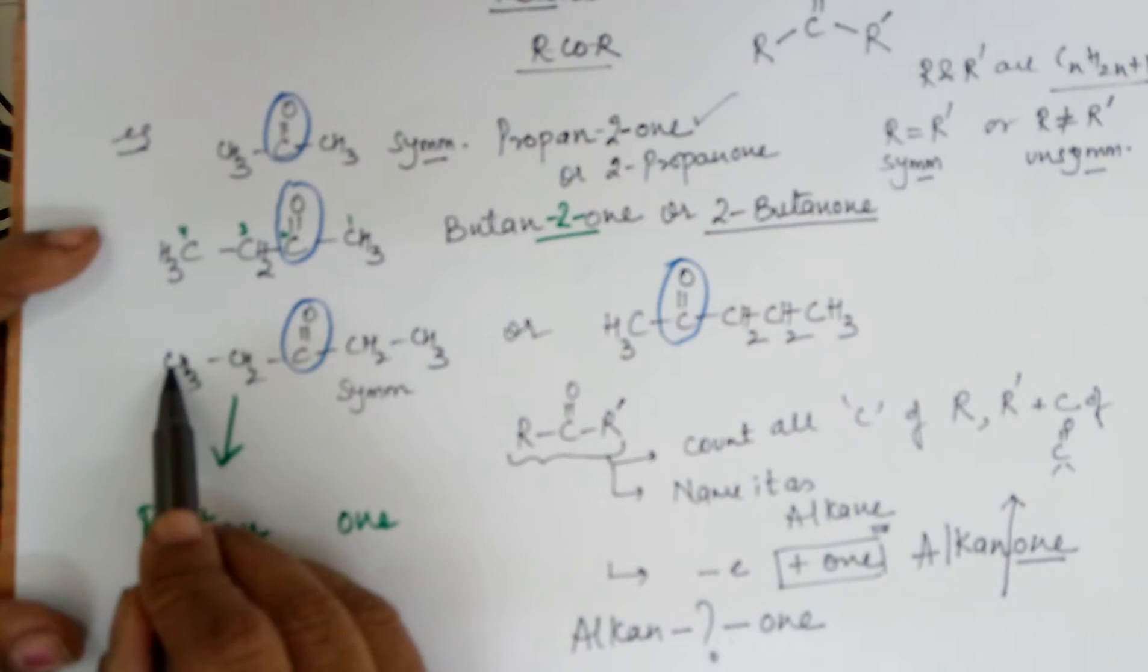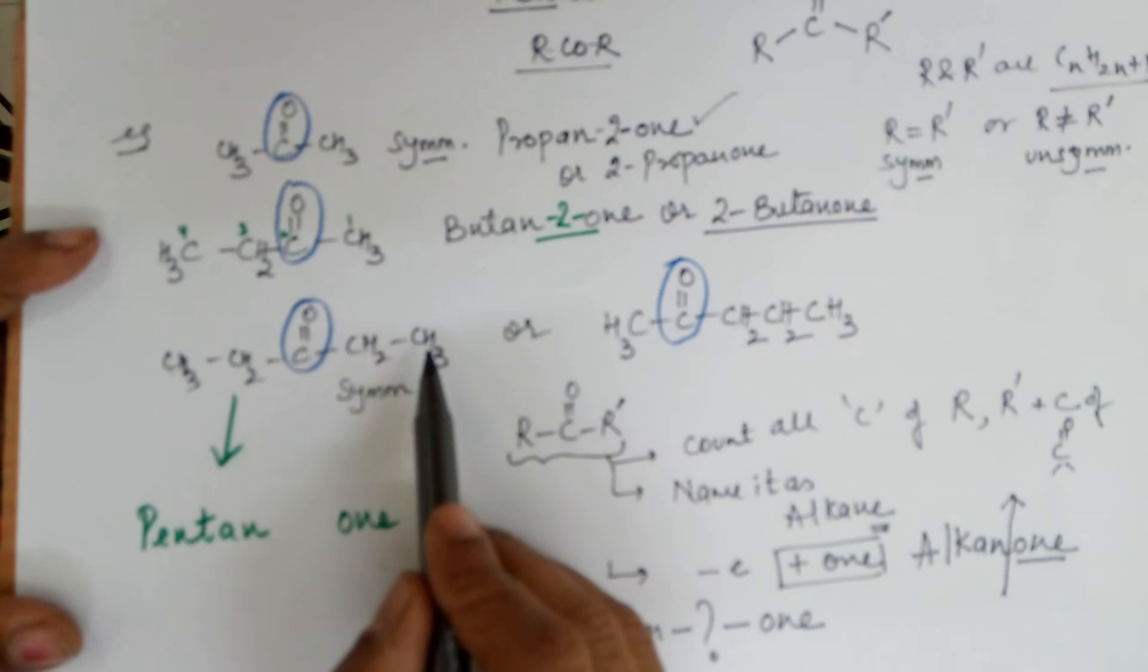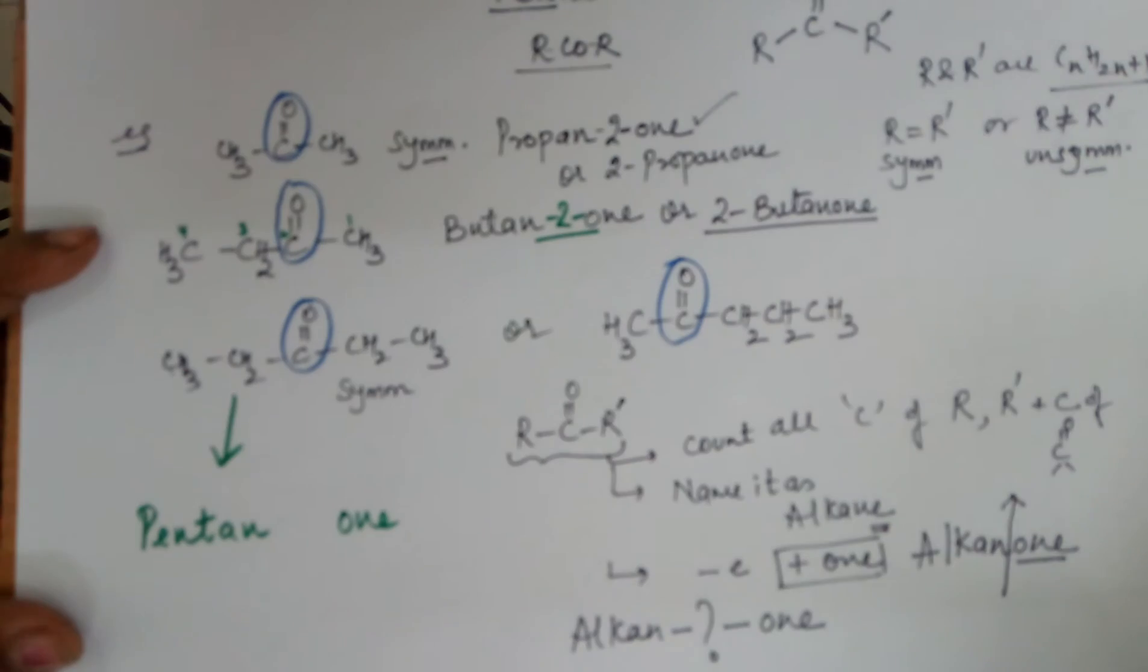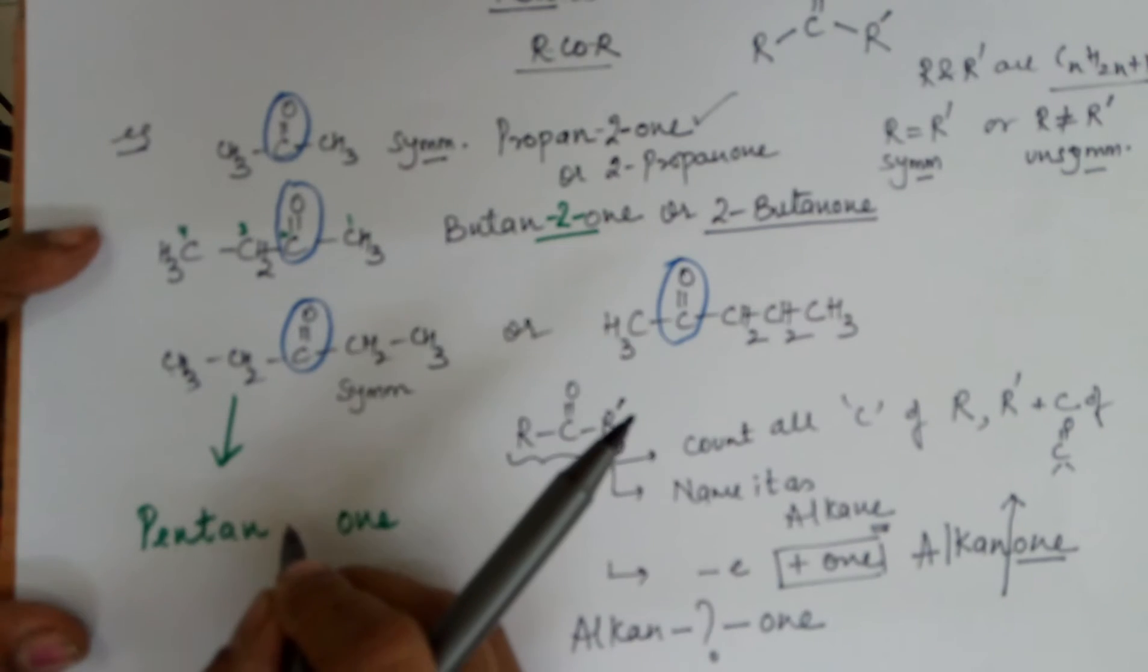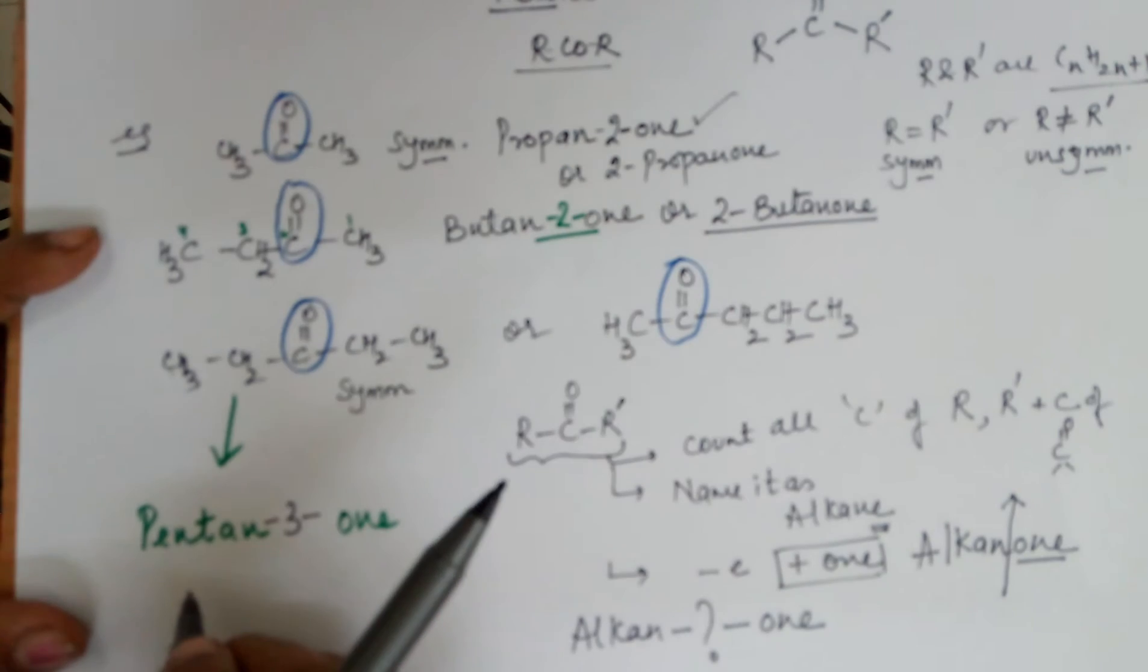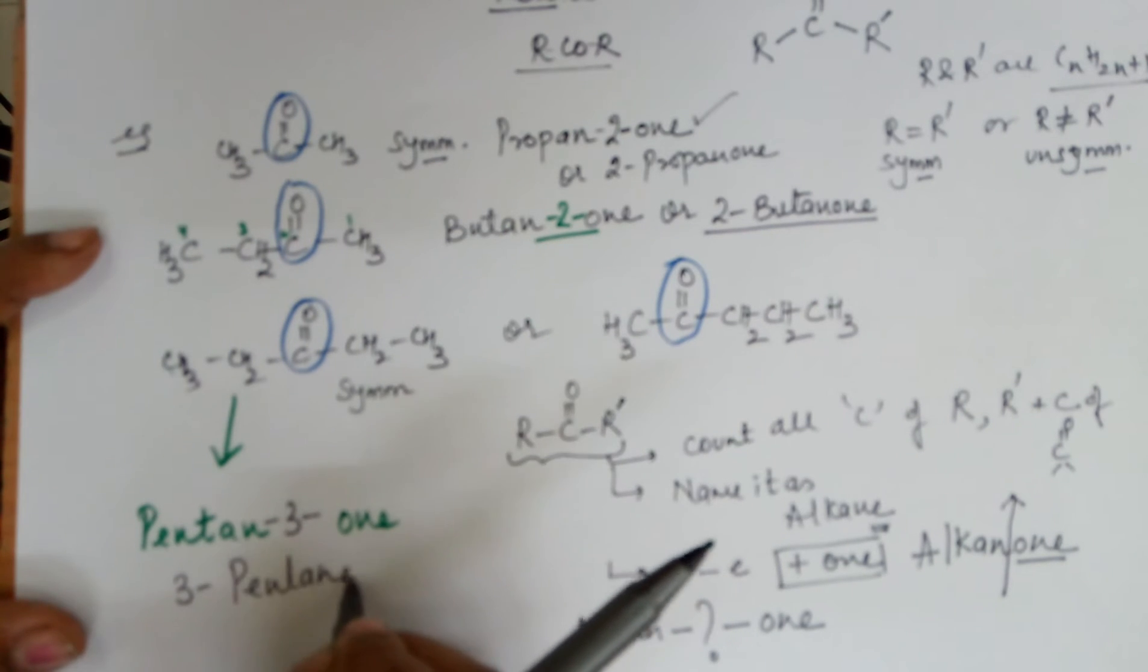If I number it from here, first, second, the third position. From here, first, second, the third position. So it is immaterial which side do you start the numbering from. The name remains the same. The answer is pentane-3-one or 3-pentanone.